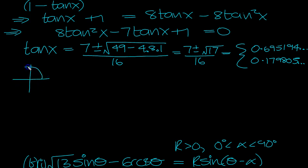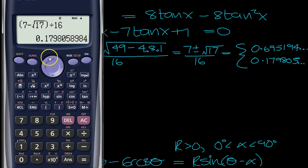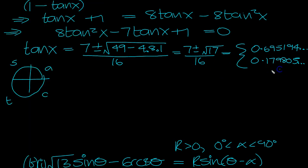So tan, CAST. So they were both positive weren't they? So both positive, so tan is positive here and here. So alpha, so we write tan alpha then is equal to the negative, so it's either of those, 0.6951 or 0.179805.